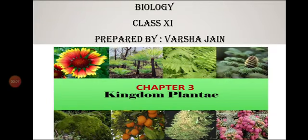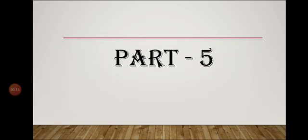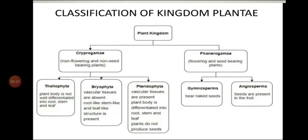Hello students, today we are continuing with Biology Class 11th, Chapter 3, Kingdom Plantae. This is the 5th lecture of this chapter. Kingdom Plantae is divided into 2 categories: Cryptogams and Phanerogams. Cryptogams are divided into 3 divisions: Thallophyta, Bryophyta, and Pteridophyta. And Phanerogams are divided into Gymnosperms and Angiosperms.